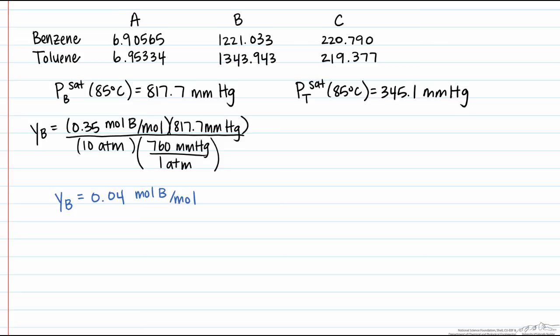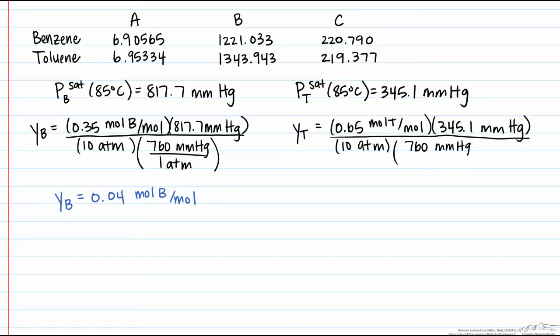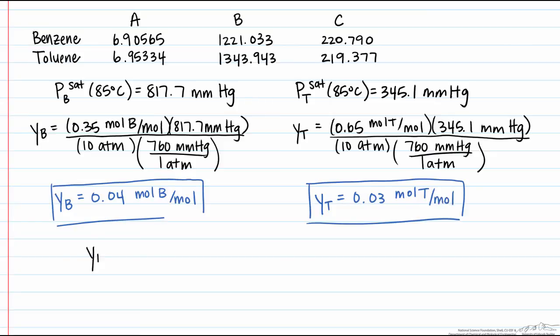And then find the mole fraction of nitrogen using the summation of mole fractions. So we're going to do the same thing for our toluene mole fraction in the vapor. And so we end up with a mole fraction of toluene that is 0.03. And now we can use the mole fraction of n equals 1 minus 0.04 minus 0.03, which equals 0.93.